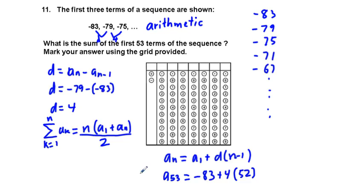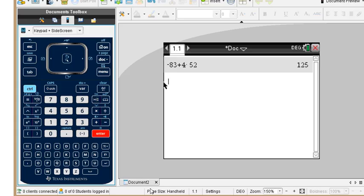So to go back here to find what our summation is, that's going to be 53 times quantity our first term is negative 83 plus 125 over 2. And over to the right I didn't write 125. And so we just need to put this in our calculator. So we have 53 times quantity negative 83, which is a sub 1, plus a sub 53, which is 125, and divide all this by 2, and we get 1,113.